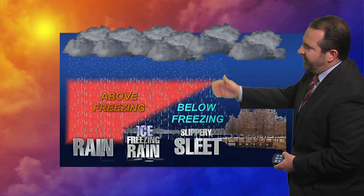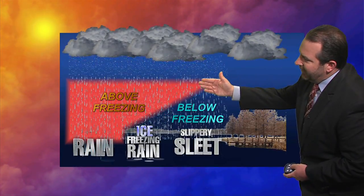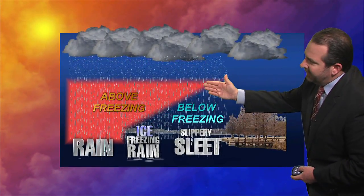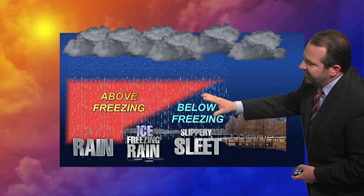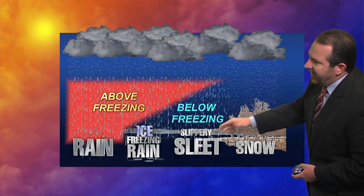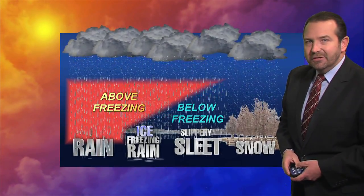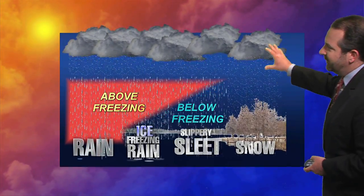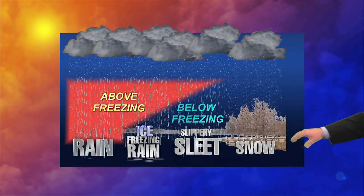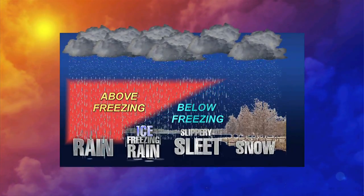What about sleet? Well, it starts off as snow, melts into a liquid, but it has plenty of time to refreeze into ice, so it falls to the ground as sleet. And then snow — starting off as snow, as it falls all the way to the ground, it does not encounter above-freezing temperatures, so it falls to the ground as snow.